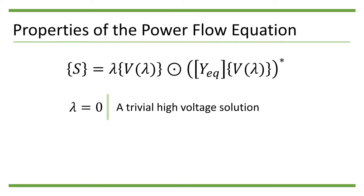For example, when all the nodes have the same voltage as the slack bus, whereas λ = 1 corresponds to the high-voltage solution we actually want.